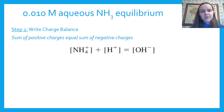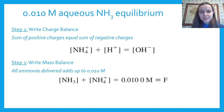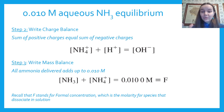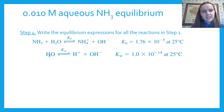Step 2 — write the charge balance: all positive charges equal negative charges. For this system: [NH₄⁺] + [H⁺] = [OH⁻]. Step 3 — mass balance: we added 0.01 M ammonia, and ammonia can become ammonium, so [NH₃] + [NH₄⁺] = F = 0.01 M, where F is the formal concentration — the total concentration of the species.